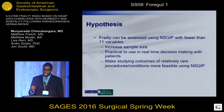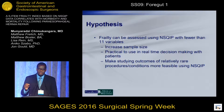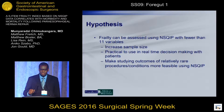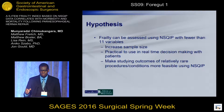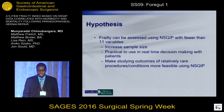We hypothesized that using a condensed frailty index might allow us to assess frailty in this cohort. This would increase our sample size, allow us to have a more condensed index to apply in real-time decision-making, as well as study rare conditions such as paraesophageal hernia.